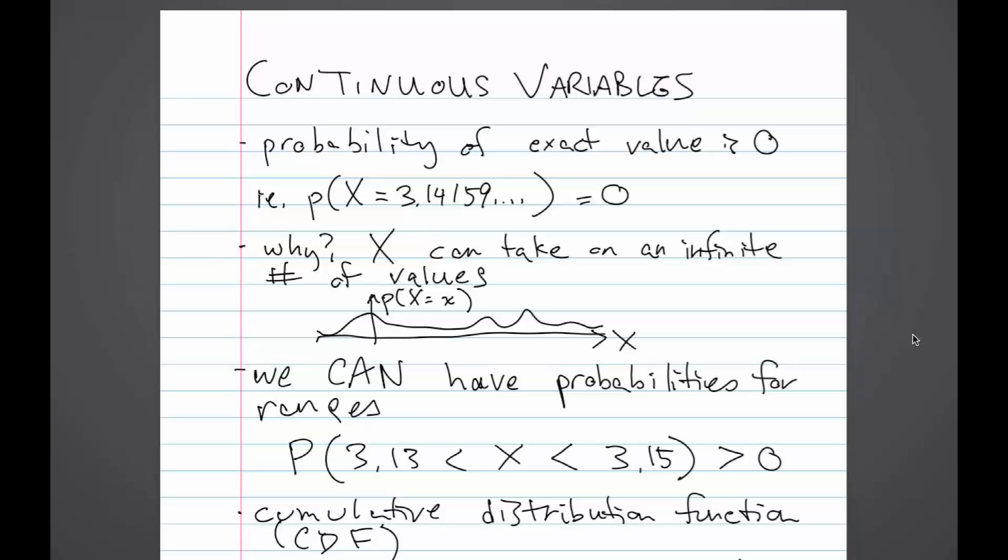With continuous variables, we don't have a notion of probabilities for exact values because x can take on an infinite number of values. So the probability of equaling any specific exact value is 0.